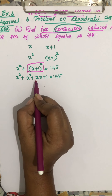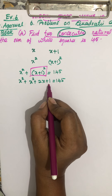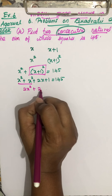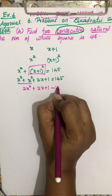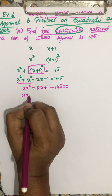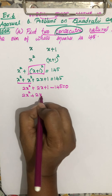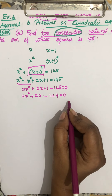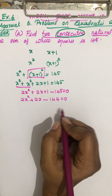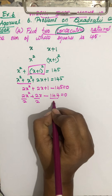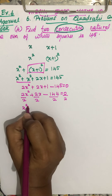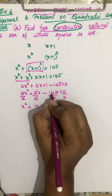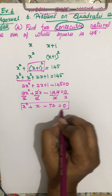Adding the x squared terms: 2x squared plus 2x plus 1 minus 145 equals 0, which simplifies to 2x squared plus 2x minus 144 equals 0. Since all terms are even, divide by 2 to get x squared plus x minus 72 equals 0. This is our final equation.